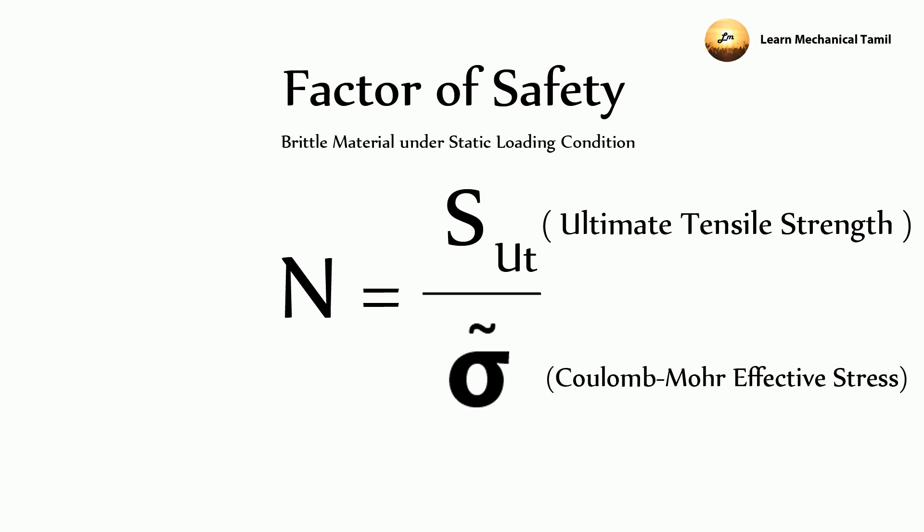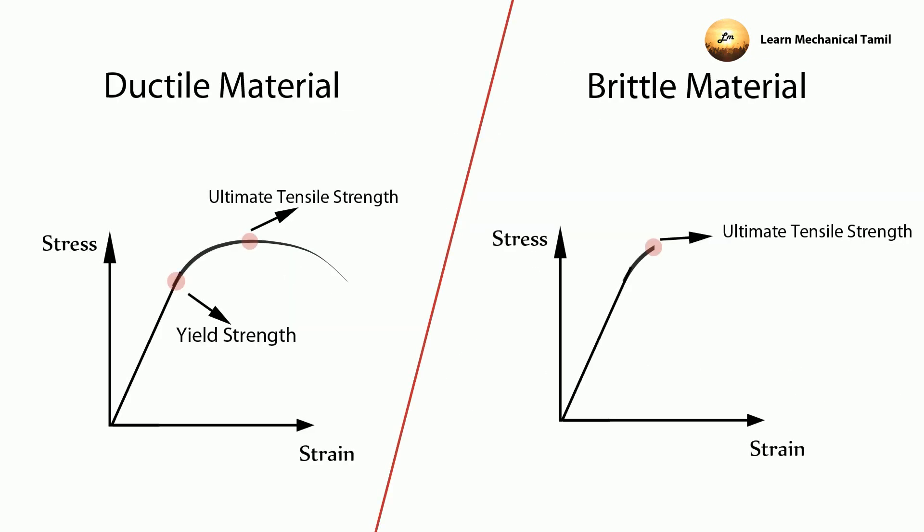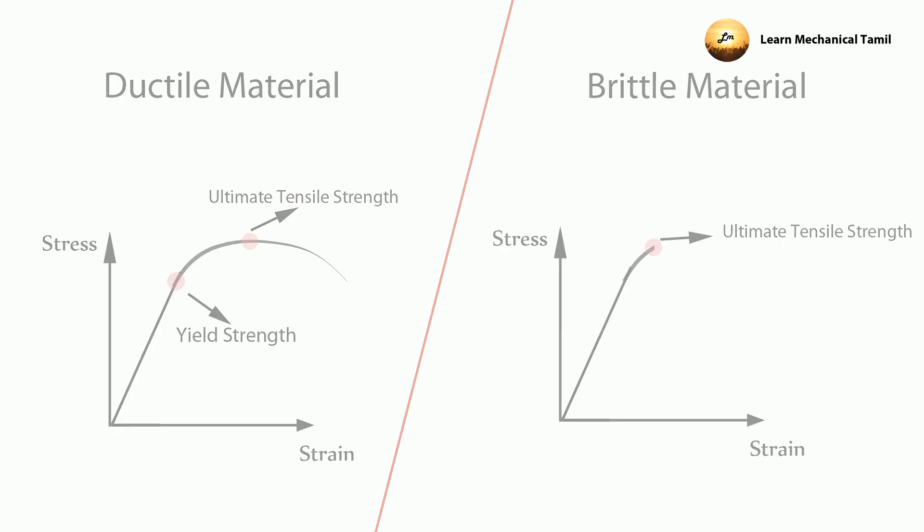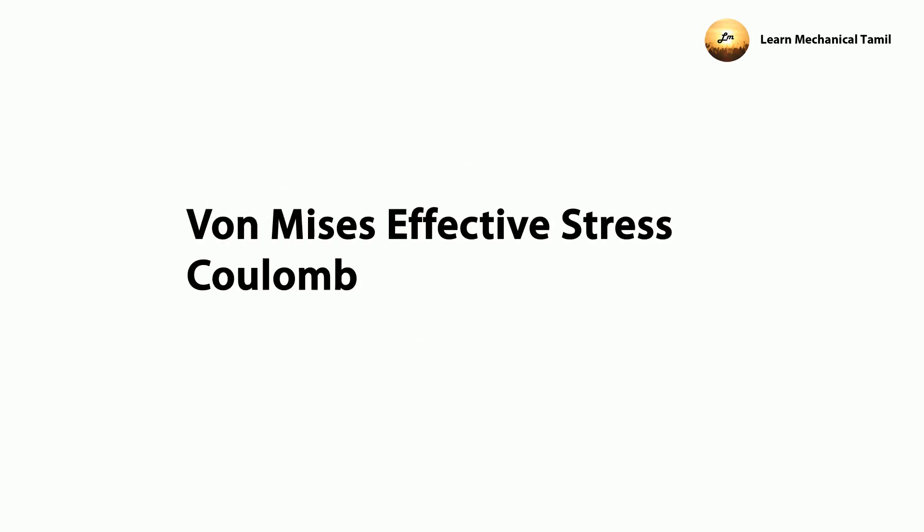For brittle materials, the elongation leads directly to fracture. When we look at the two stress-strain curves, we need to calculate the fracture point. In ductile materials the fracture behavior differs from brittle materials.